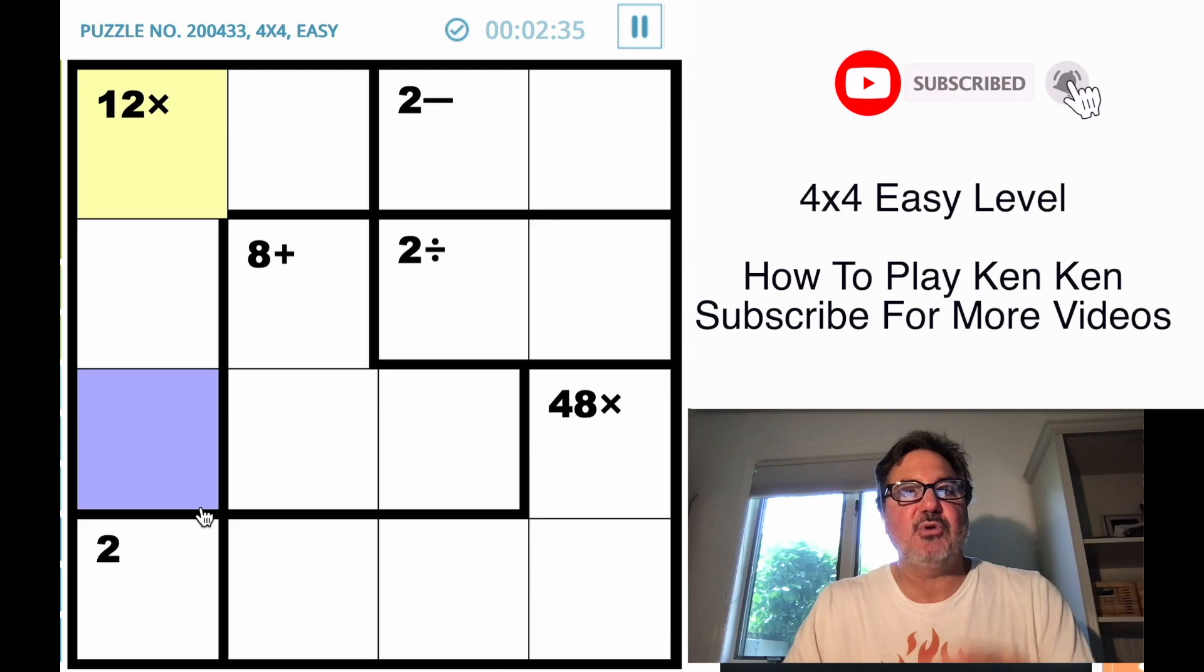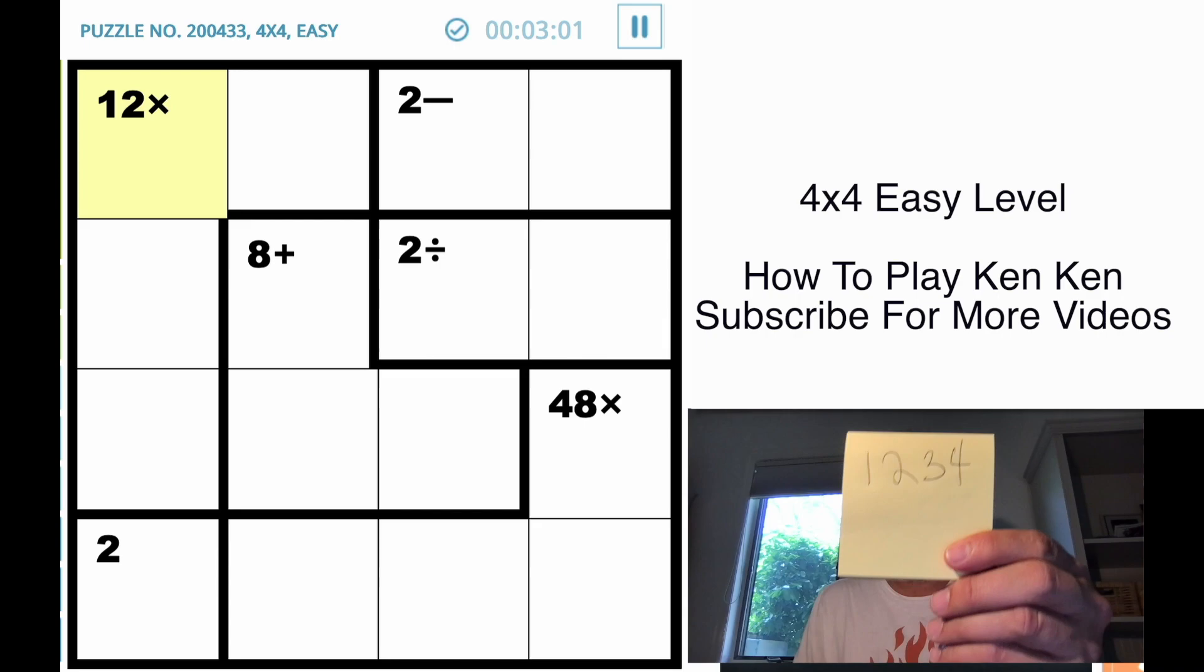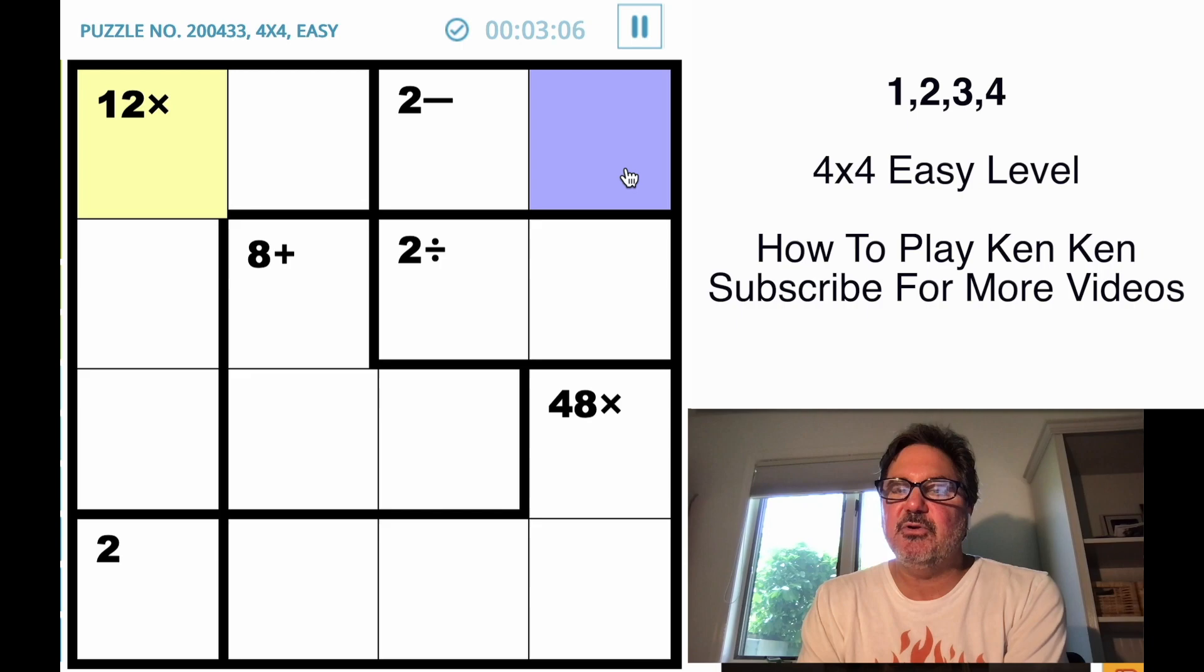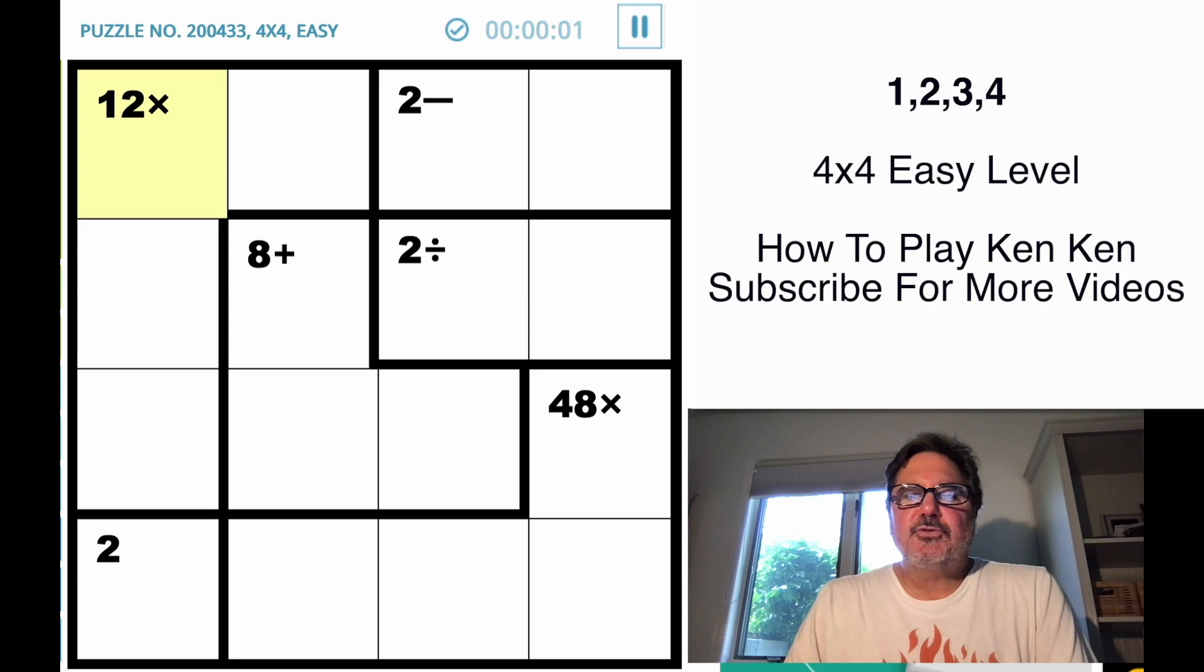I also have much more difficult versions on how to play this, so after you've learned this one please keep going to the harder levels. So let's get going. The first thing I like to do, and I can't do it on the screen so I do it on the side, is I write down the numbers one through four, or if it's a five by five grid, one through five, and I put it on my computer next to me.